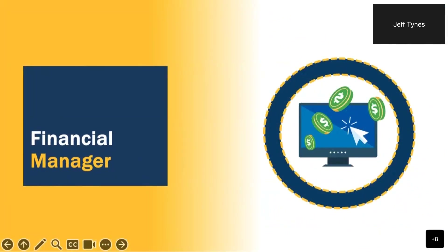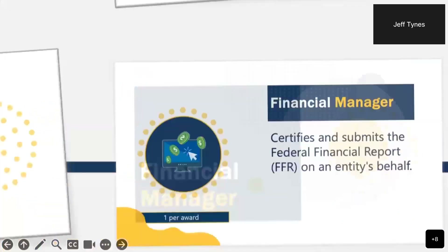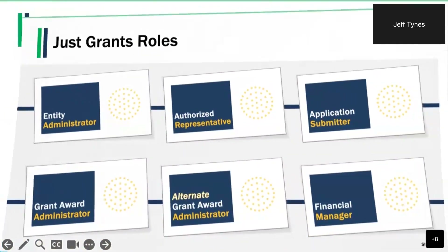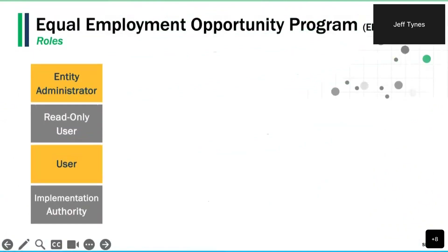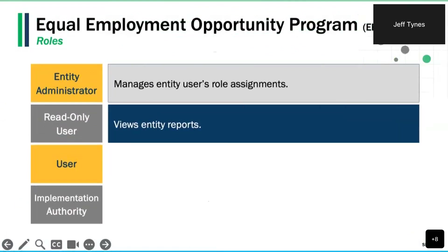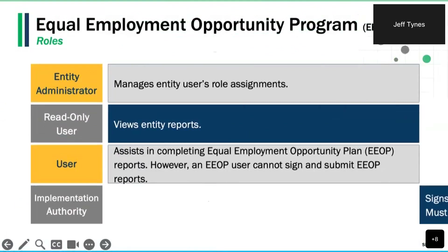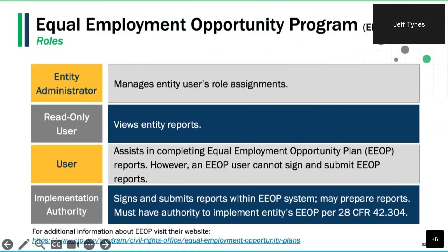Finally, your Financial Manager is the one who certifies and submits quarterly federal financial reports on behalf of your organization. Certain entities that receive DOJ funding are also required to submit an Equal Employment Opportunity Plan. The purpose of the EEOP plan is to ensure entities receiving DOJ financial assistance provide full and equal employment opportunities to prospective employees. There are four EEOP roles, each with unique duties, and individual users can only be assigned one EEOP role in addition to any JustGrants roles.